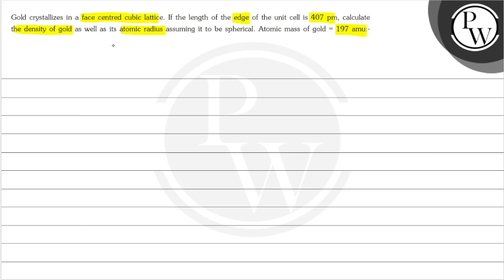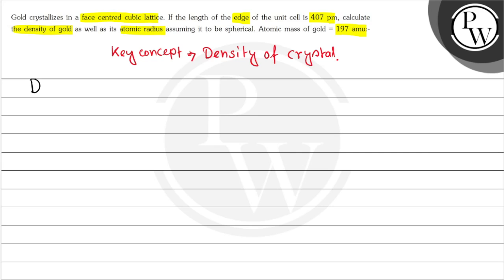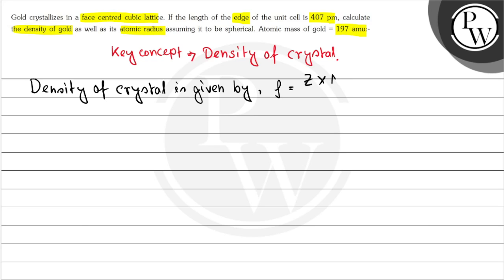So let's see this question. Key concept: density of crystal. So the formula for density of crystal is: rho is equal to z into m, divided by a-cubed into N.